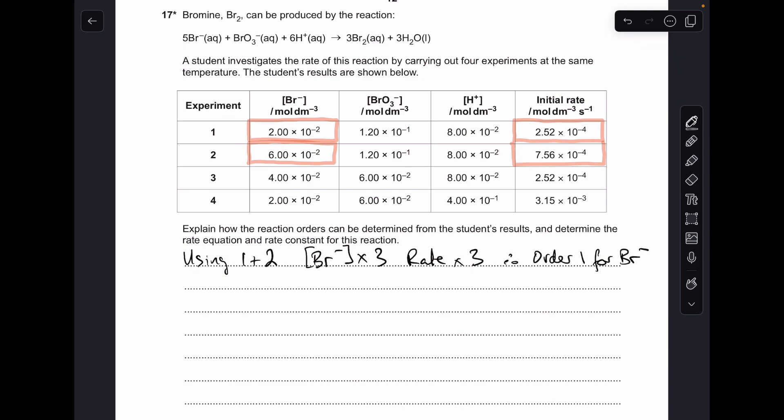So in terms of an answer, all we need to do is something like I've done there: say which experiments we're using, one and two; say what's happening to the bromide ion concentration, it's going up three times; and say what's happening to the rate, it's also going up three times. So the order for the bromide ion is one.